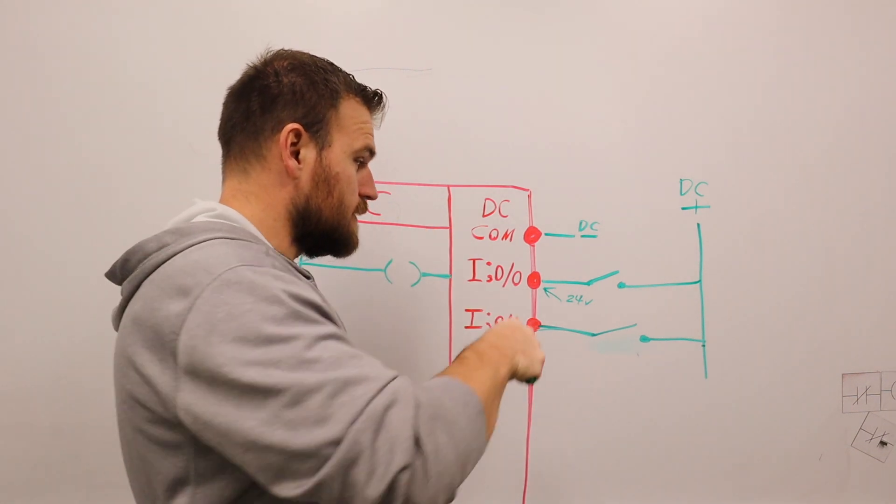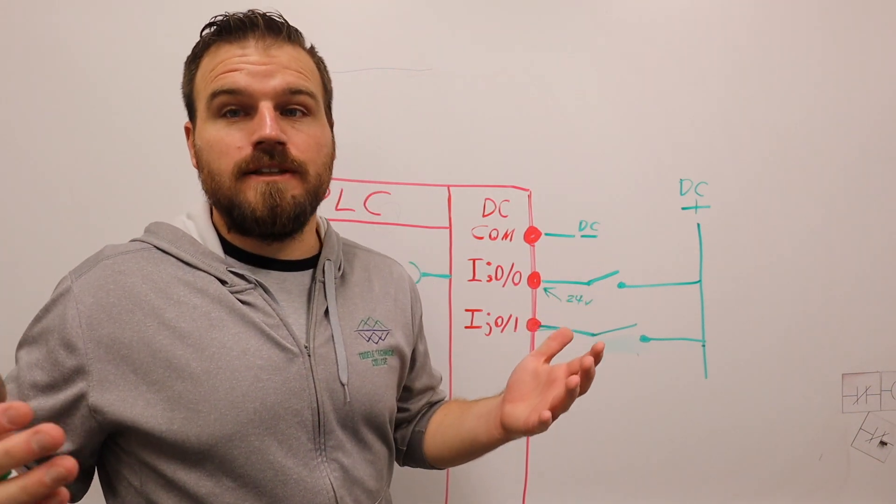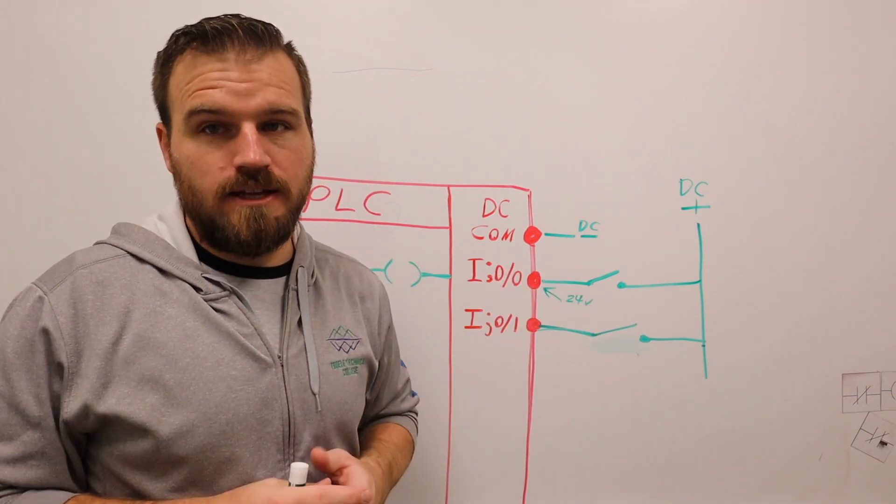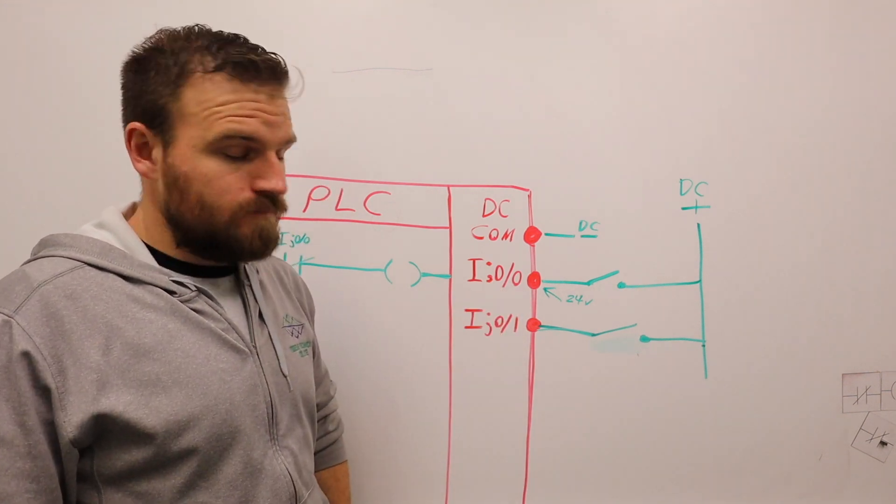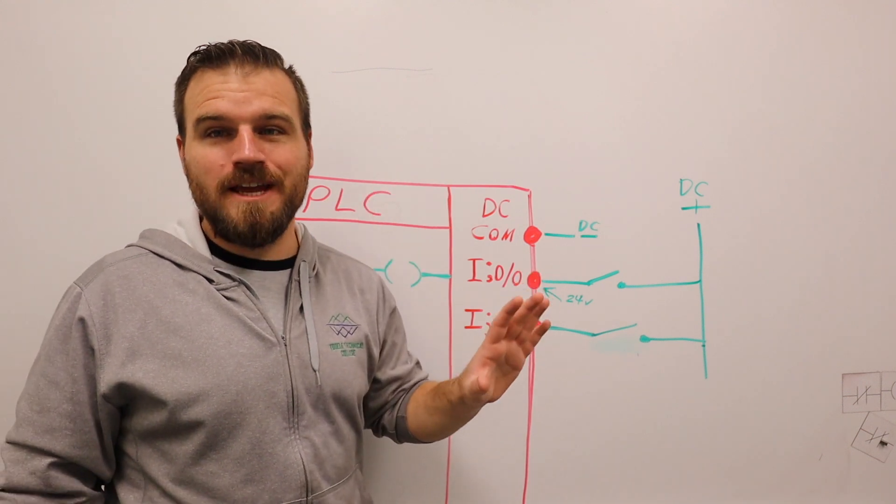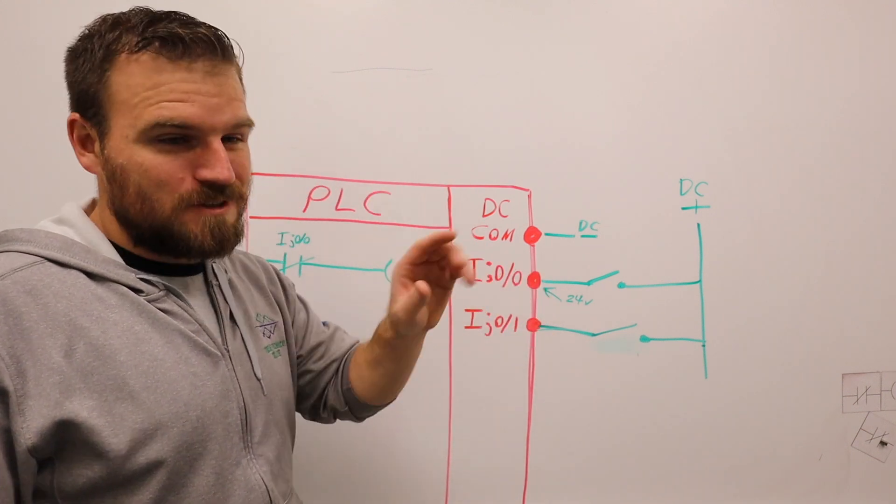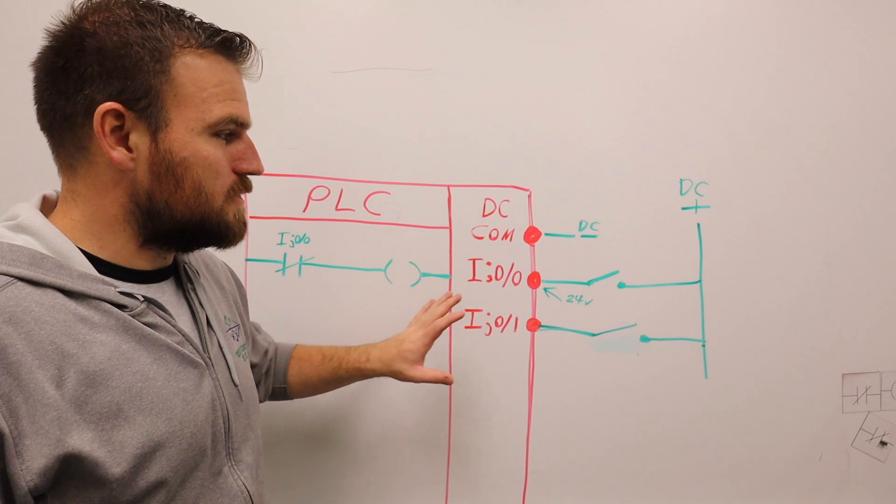Now something's very important. Do not think that the PLC is smart in any way. It knows whether you've got 24 volts or you don't. Literally, you could come over and touch the terminal with a wire and it has no clue if that's a switch. It has no clue what's connected on the end of it. It knows it's getting 24 volts or it's not.